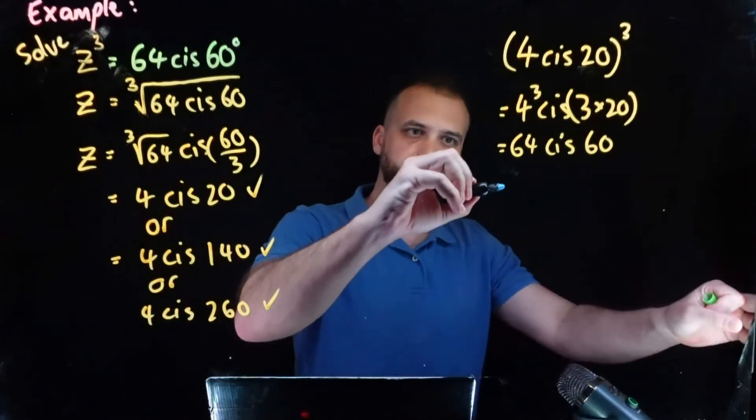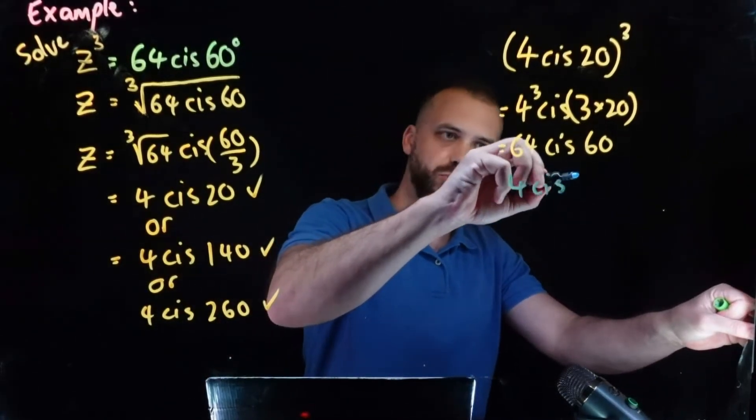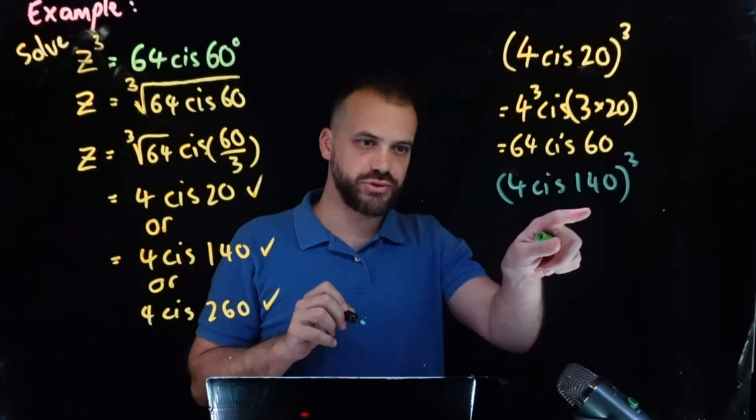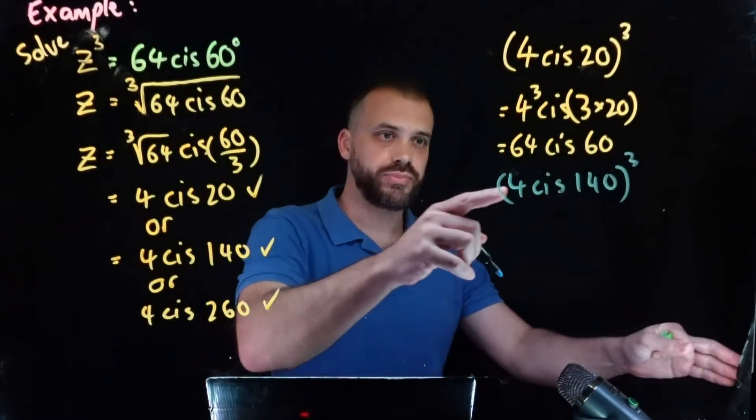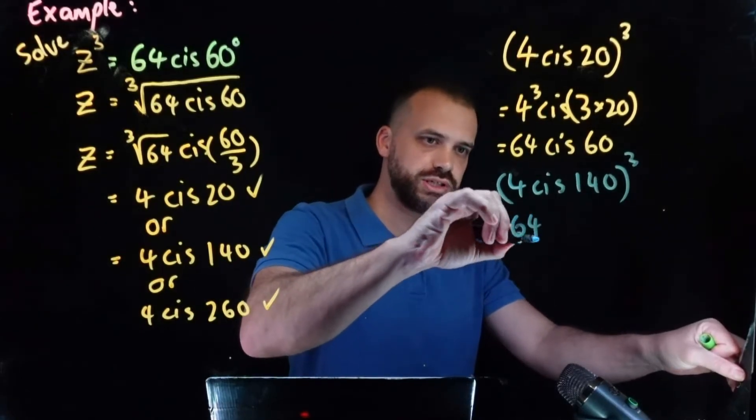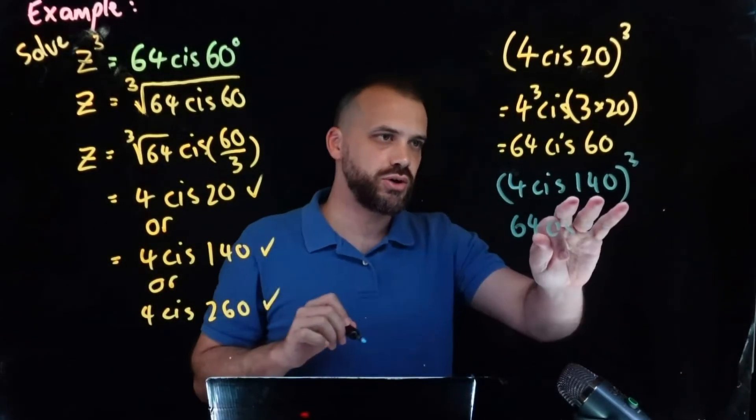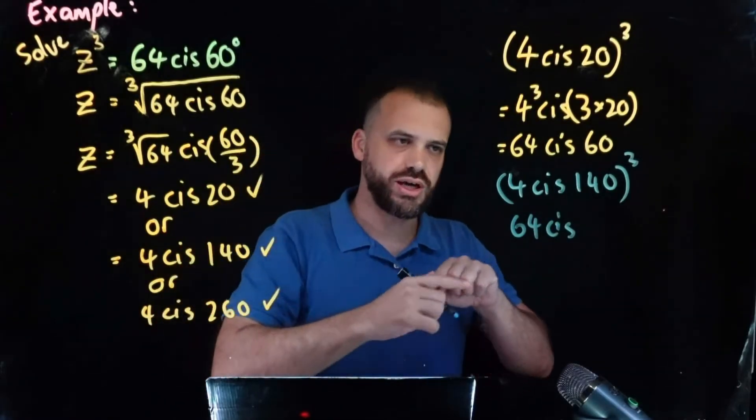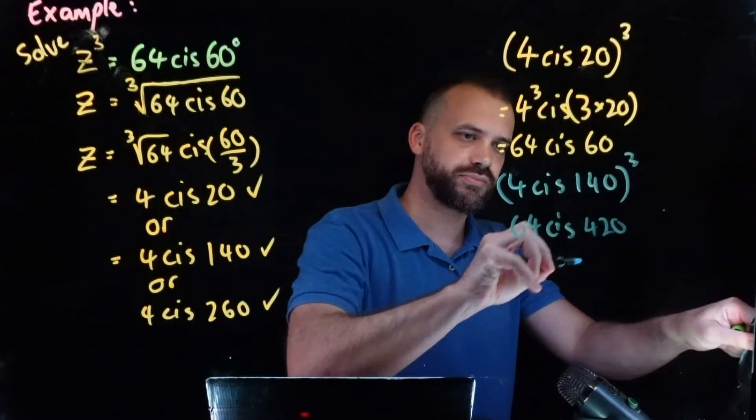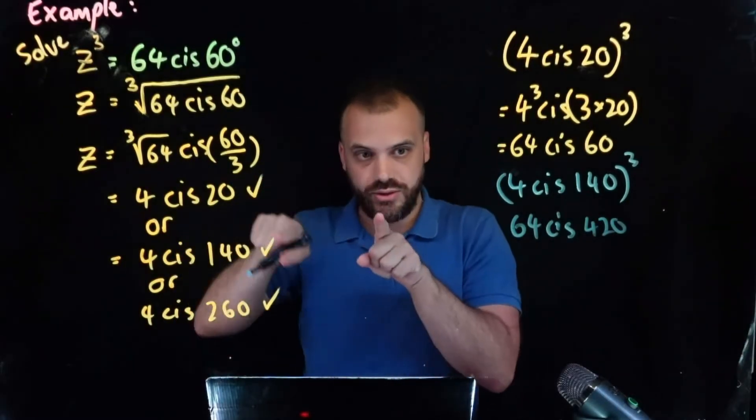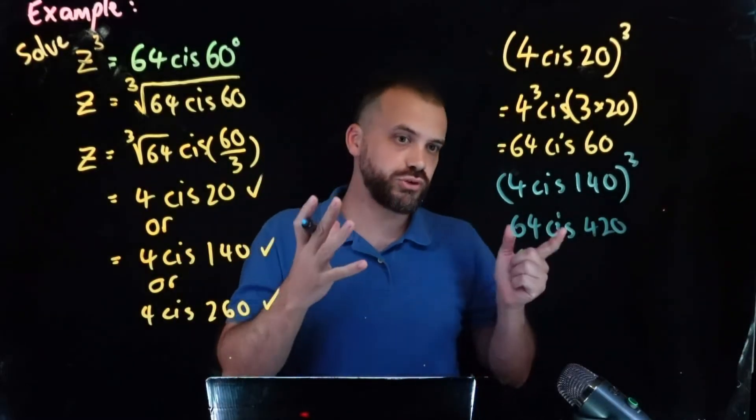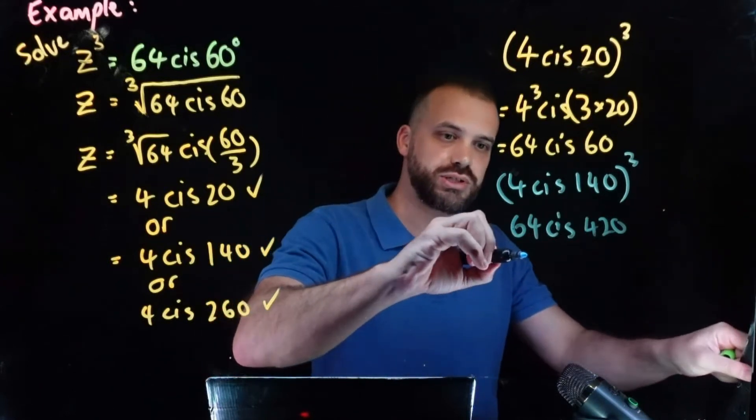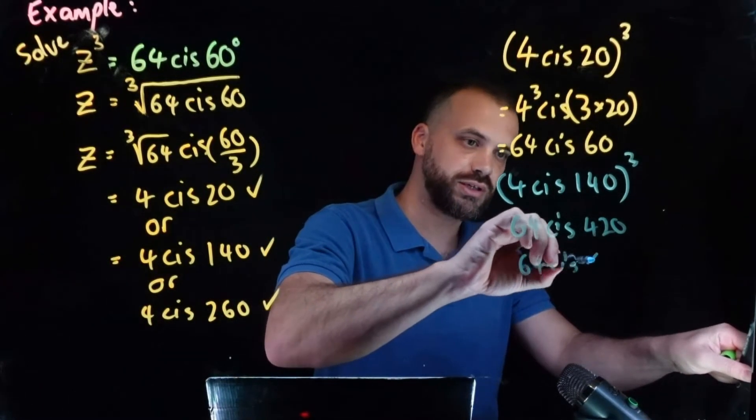If we took our solution 4 cis 140 and we raised it to the power of 3 what would we get? 4 to the power of 3 which is 64 cis 140 times 3 which is 420. Now of course 420 around the circle, 420 minus 360 leaves us with our answer which is 64 cis 60 which is where we started.